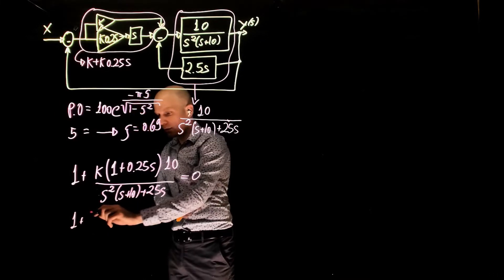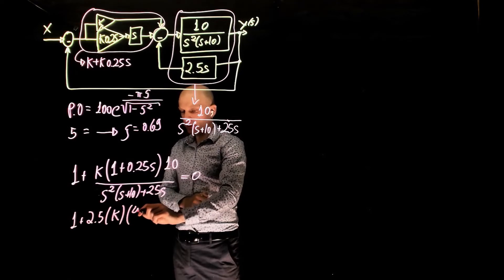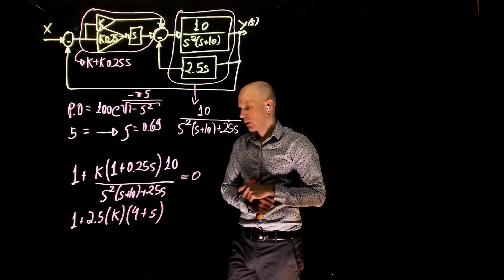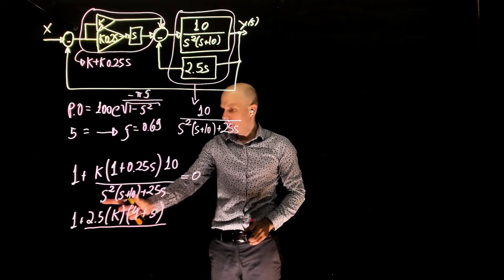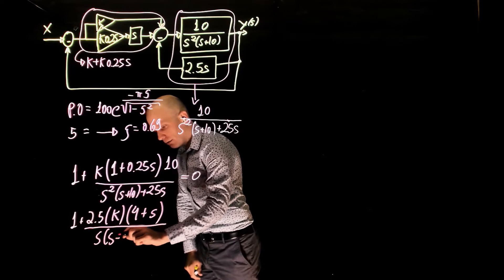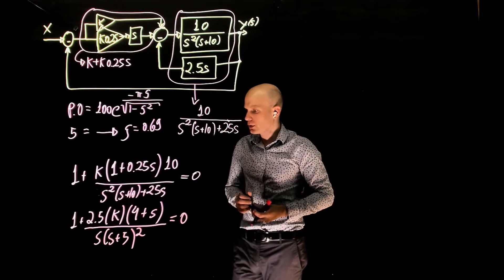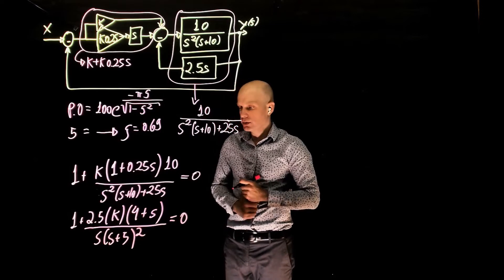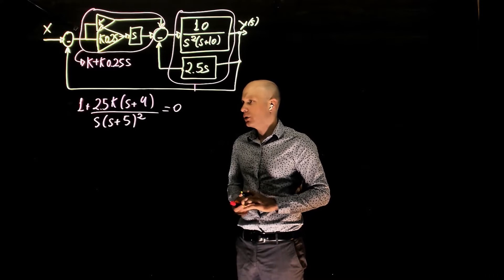So we have 1 plus 2.5 times k times 4 plus s. In the denominator, if you now expand this expression here, you will see that this whole thing will simplify to s times s plus 5 squared, simple math, equals 0. This way we have an explicit representation of poles and zeros. Now that we have an expression written in the standard form required for root locus, we can start to draw it.